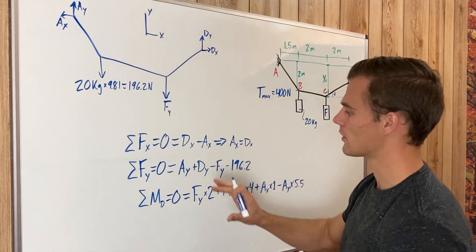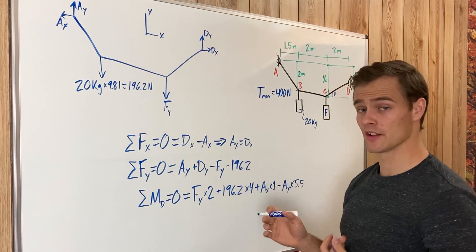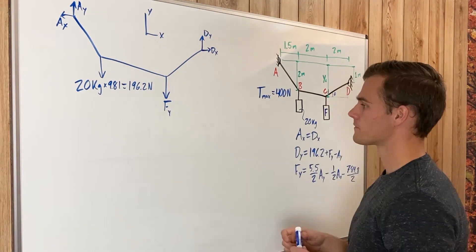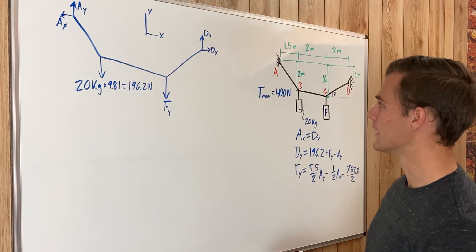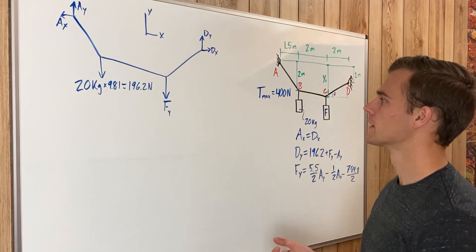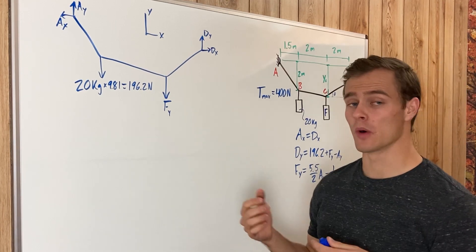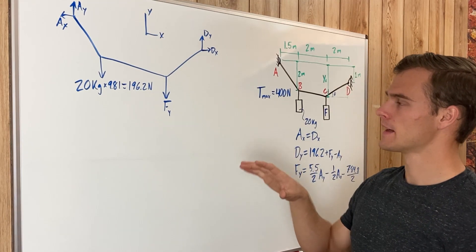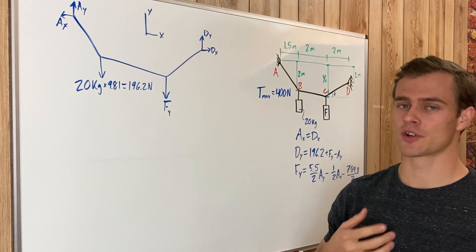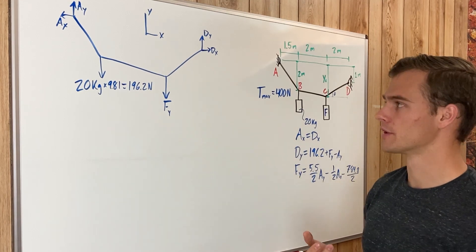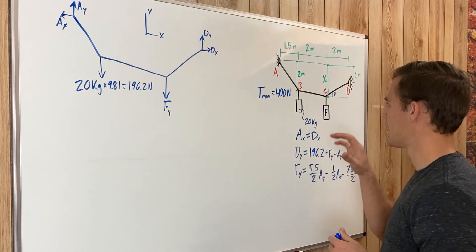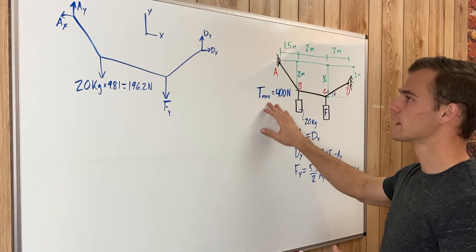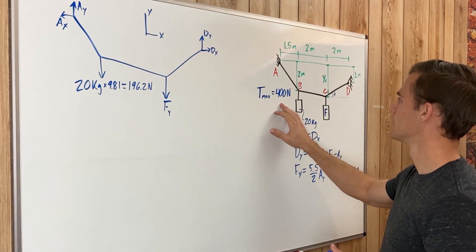We now have three equations but more unknowns than knowns, so we set them aside and determine where to go next. We'll use the fact that the maximum tension is 400 newtons in one of the cable segments to identify where we can solve for unknowns.